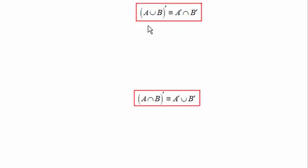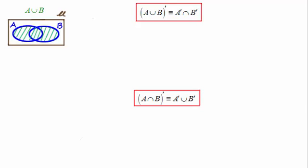So for this first one here we've got A union B complemented is identical to A complemented intersected with B complemented. And what we've got here then is A union B. Remember it's everything in A or B or both.